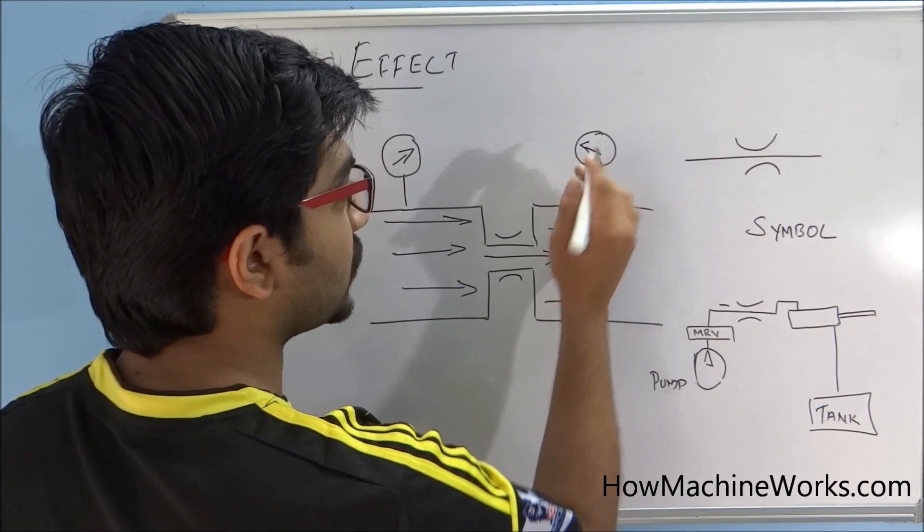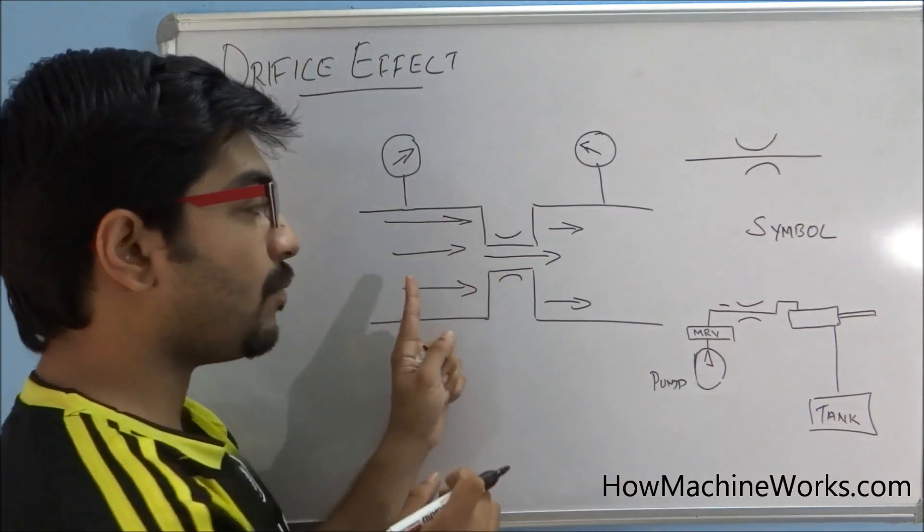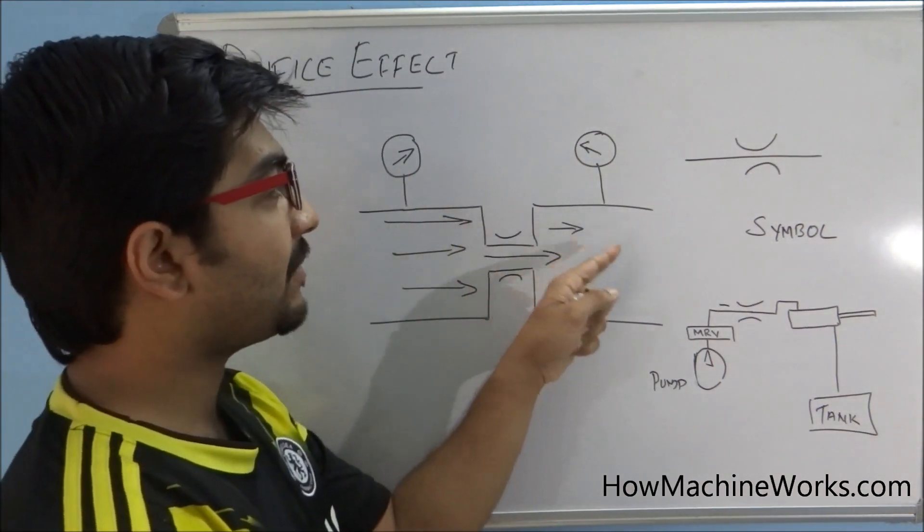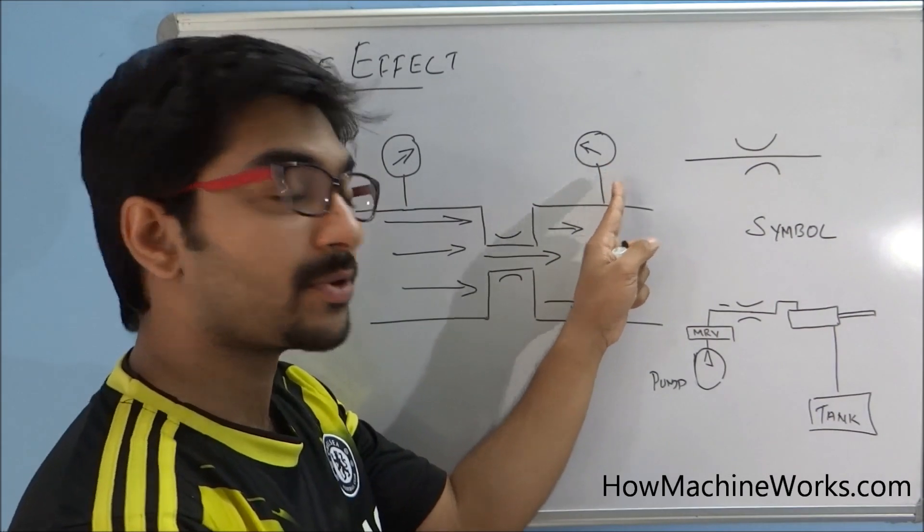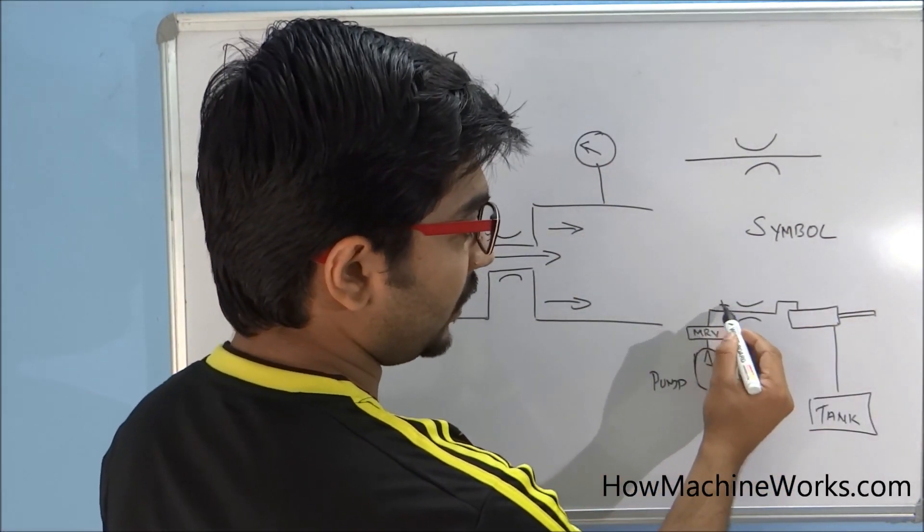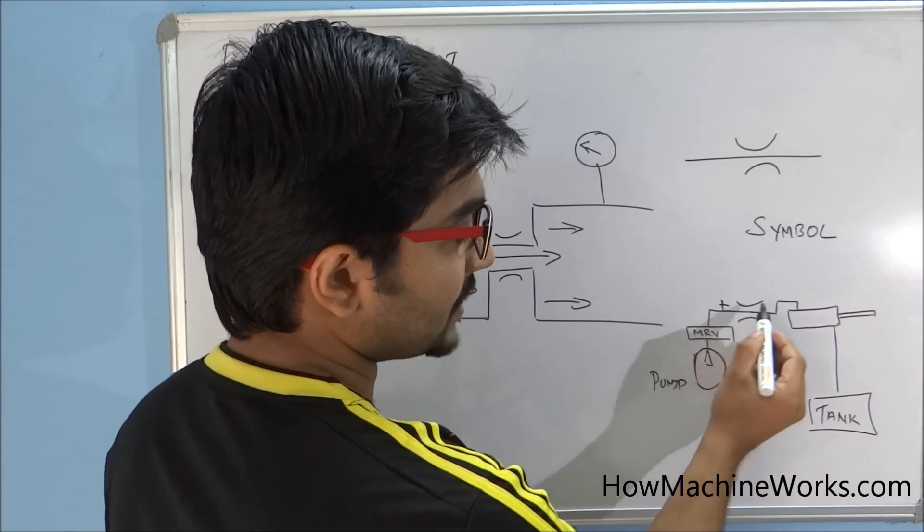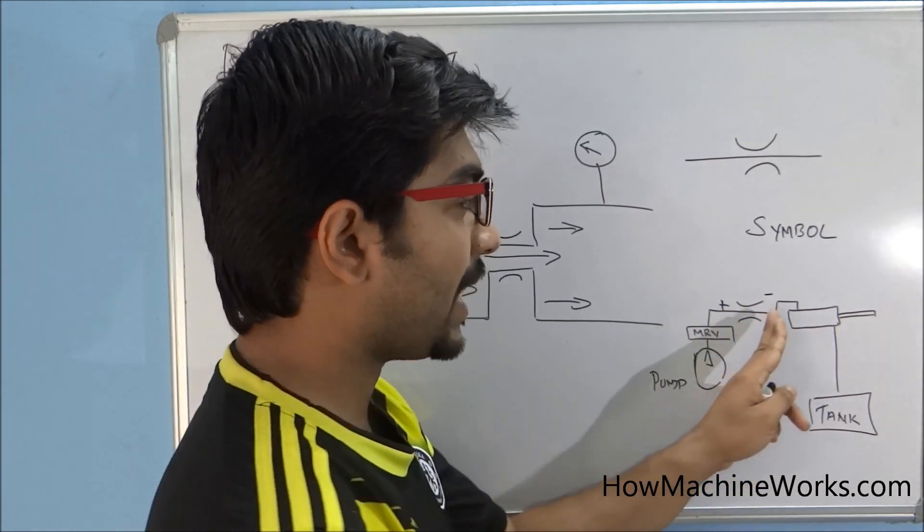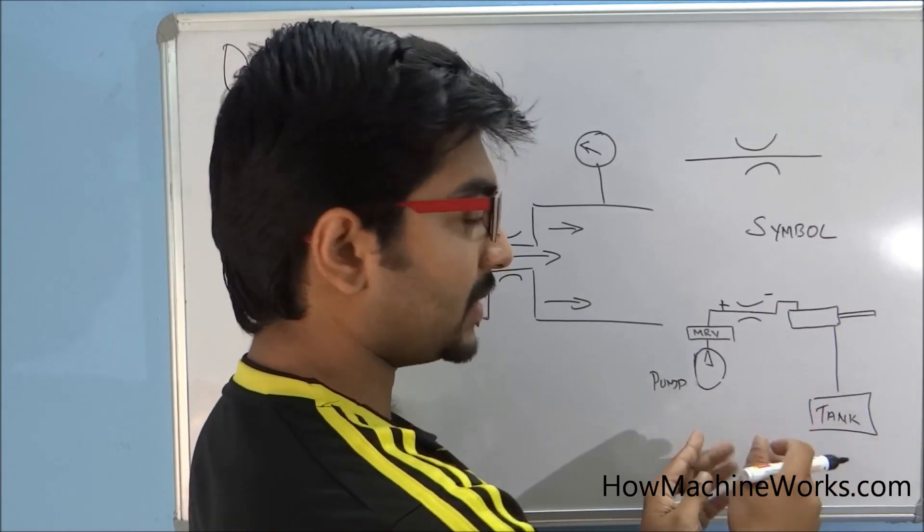Here we will have a lesser pressure. So before the orifice we will have more pressure like this, and after the orifice we will be having a lesser pressure. So in a hydraulic circuit, the pressure will be high over here - more pressure before the orifice and less pressure after the orifice.